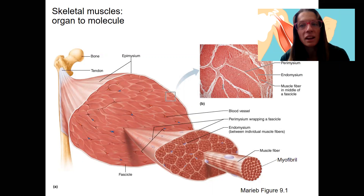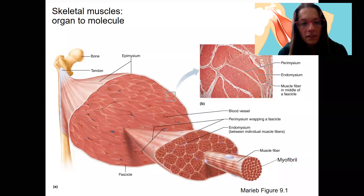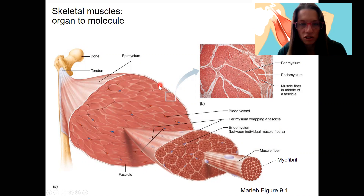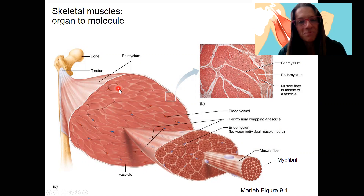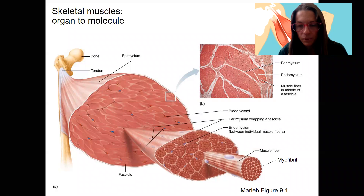I'm going to go into a better picture for the rest of it. It looks a lot more complicated, but really a lot of this is what I just showed you. Here's the bone, the tendon, and then the epimysium surrounds the entire muscle — that's the sheath right here. The entire muscle is then divided into fascicles. Fascicles are actually visible when you eat a steak or eat meat; these are the cross-section, and these here are individual fascicles.